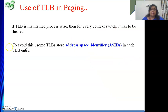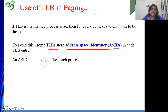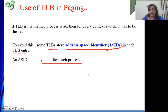To avoid this flushing, some TLBs store an Address Space Identifier (ASID) in each entry, representing the process ID of the process currently using that entry. An ASID uniquely identifies each process. Since every process has its ASID stored in the TLB, matching is done on both page number and ASID — only on a match is it a hit. Next, we will look at some numericals on virtual memory along with TLB.